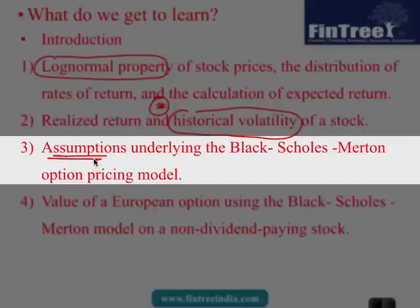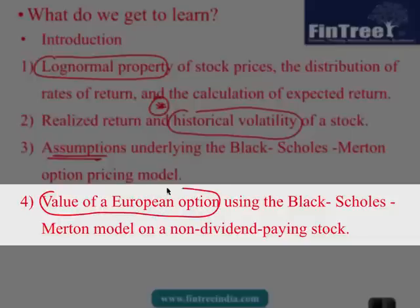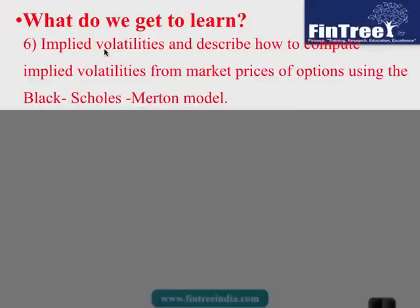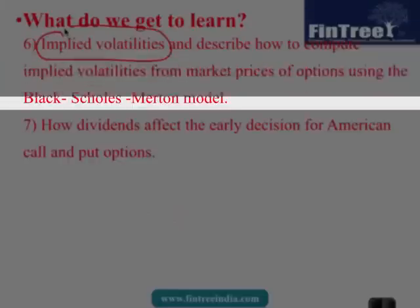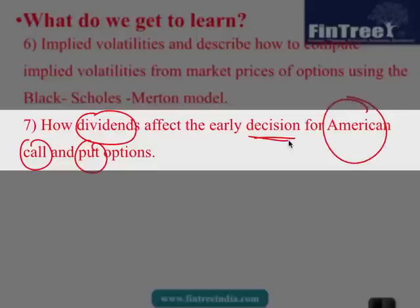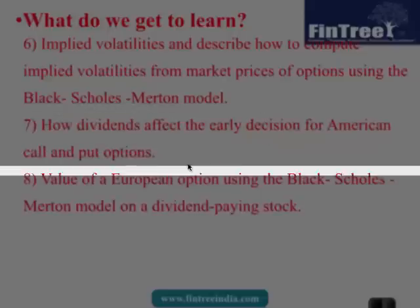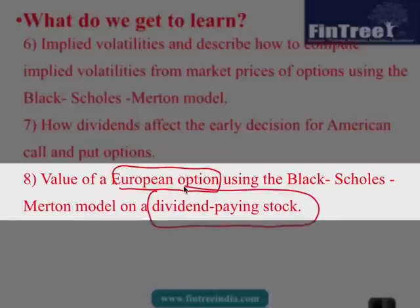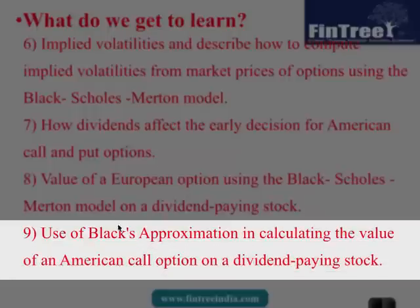Assumptions under BSM, and then calculation of value of European option using the BSM on a non-dividend paying stock. Then what complications would be involved while valuing warrants. Then the concept of implied volatilities. How dividend would affect the valuation of call and put, especially if it's an American option. Then how do we take decisions about the exercise. And then the valuation of European option using BSM if it is a dividend paying stock. And then finally the black model.